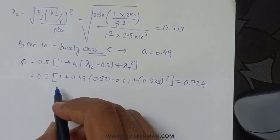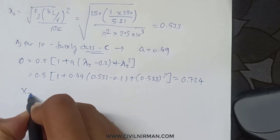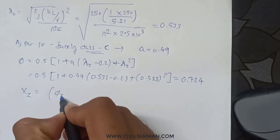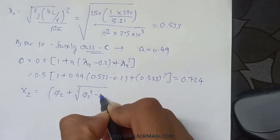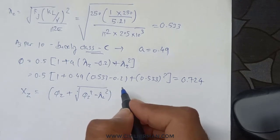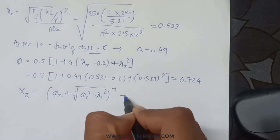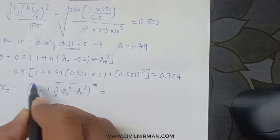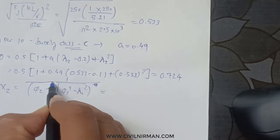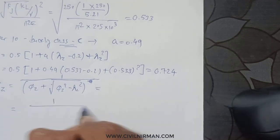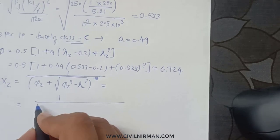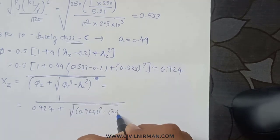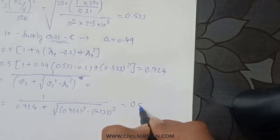Next we work out χ (chi), the stress reduction factor. The equation is: χ = 1 / [φ + √(φ² − λ²)]. Substituting: χ = 1 / [0.724 + √(0.724² − 0.533²)] = 1 / [0.724 + √(0.524 − 0.284)] = 0.825.